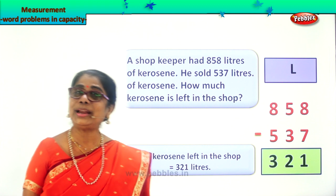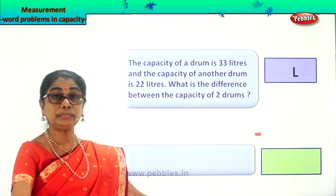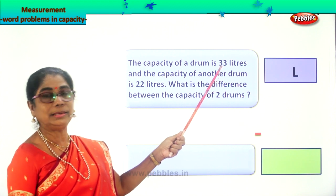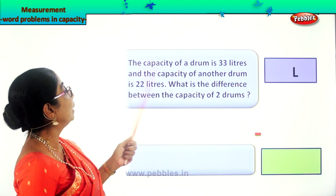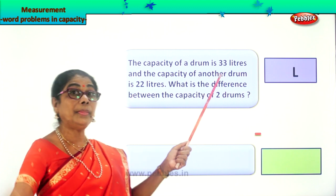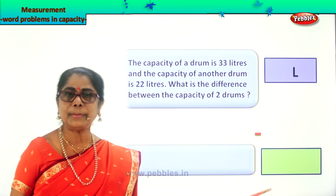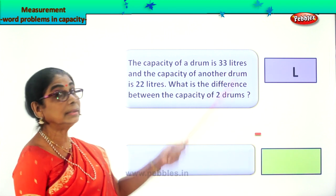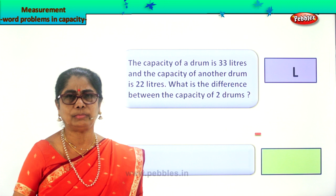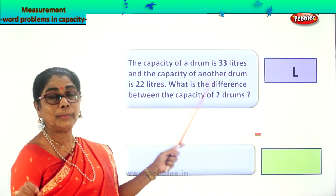Did you enjoy? Let's look at another word problem. Let's read together. There is a drum. Capacity means how much it can hold. The capacity of a drum is 33 liters. There is a big drum and a small drum — the big one can hold 33 liters, the small one can hold 22 liters. The question is: what is the difference between the capacity of the two drums? When you say 'difference,' it is a subtraction problem. Shall we work out the sum?